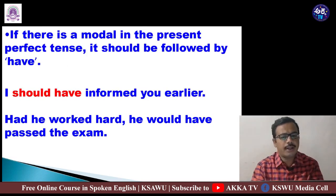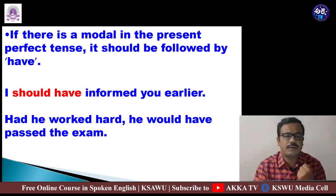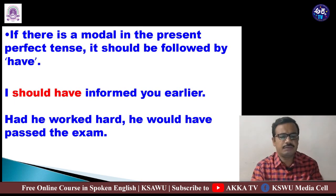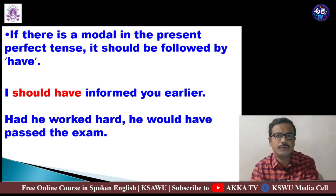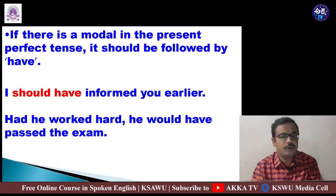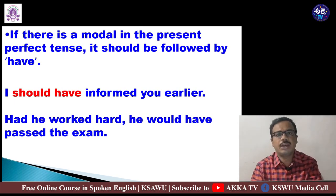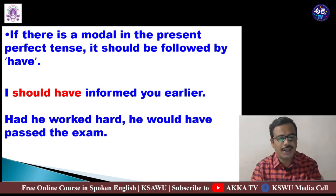If a modal is used in the present perfect tense, it should be followed by 'have,' and then the third form of the verb. For example: 'I should have informed you earlier' — 'I' is subject, 'should' is modal, 'have' follows, then 'informed' is V3. This can be contracted naturally. Another example: 'Had he worked hard, he would have passed the exam' — 'he' is subject, 'would' is modal, 'have' follows, then 'passed' is V3.